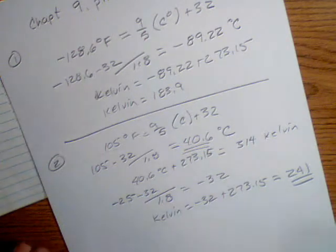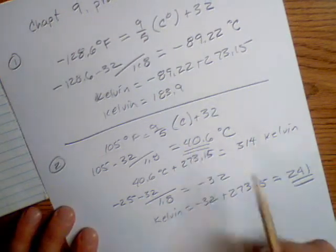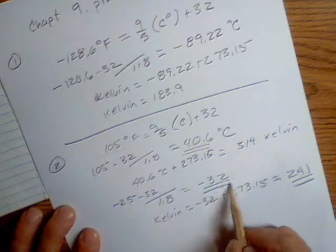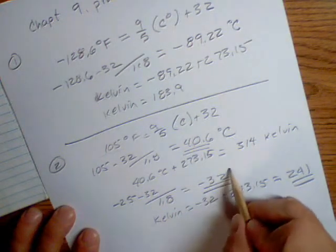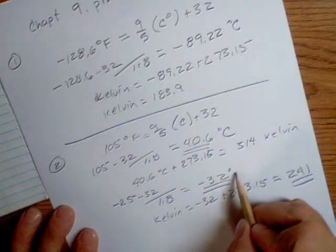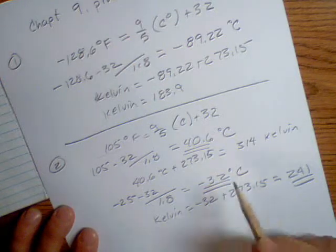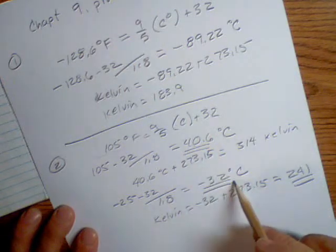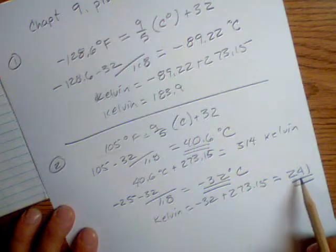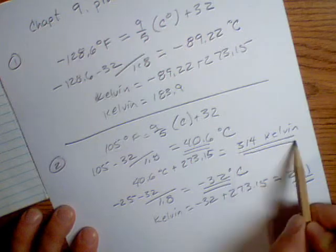These are the upper and lower limits of the range — this one is in degrees C, and here it is in Kelvin.